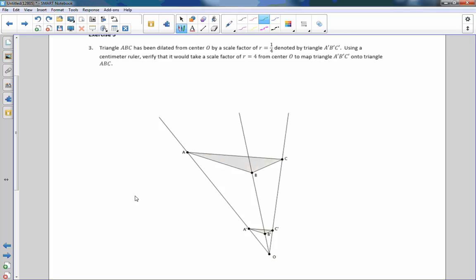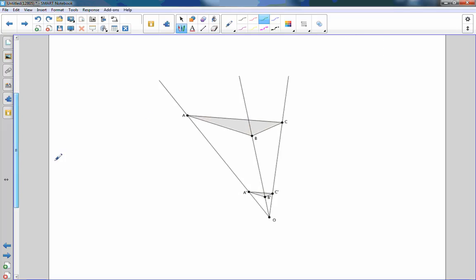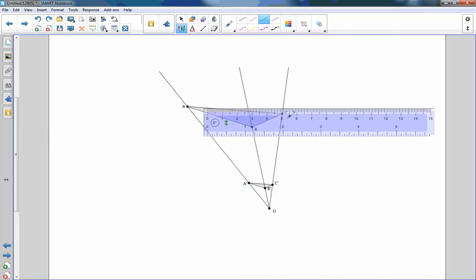Exercise three says triangle ABC, which is the bigger one up here, this is triangle ABC, has been dilated from the center O by a scale factor of one-fourth. So the distance from O to C prime is one, and the distance from O to C would be four times whatever O to C is. So it says, using a centimeter ruler, verify that it would take a scale factor of R equals four from the center to map triangle A prime, B prime, C prime back up to the original image onto the triangle ABC.